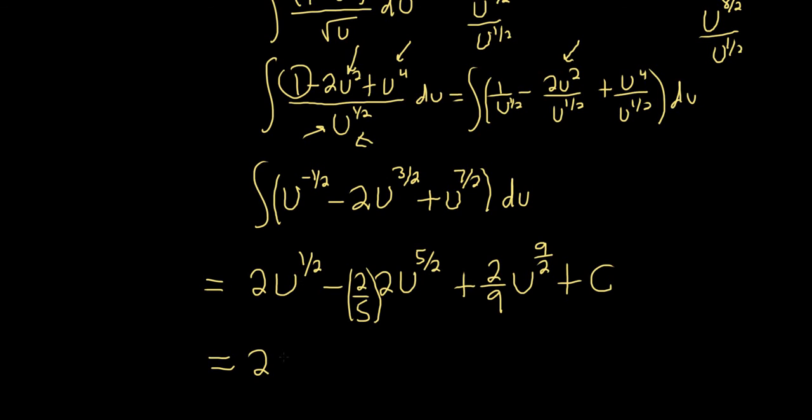This u to the 1 half, let's be fancy. Let's turn it into a square root, just because we can. So sine t minus 4 fifths. And this is sine to the 5 halves t plus 2 ninths sine to the 9 halves t plus c.